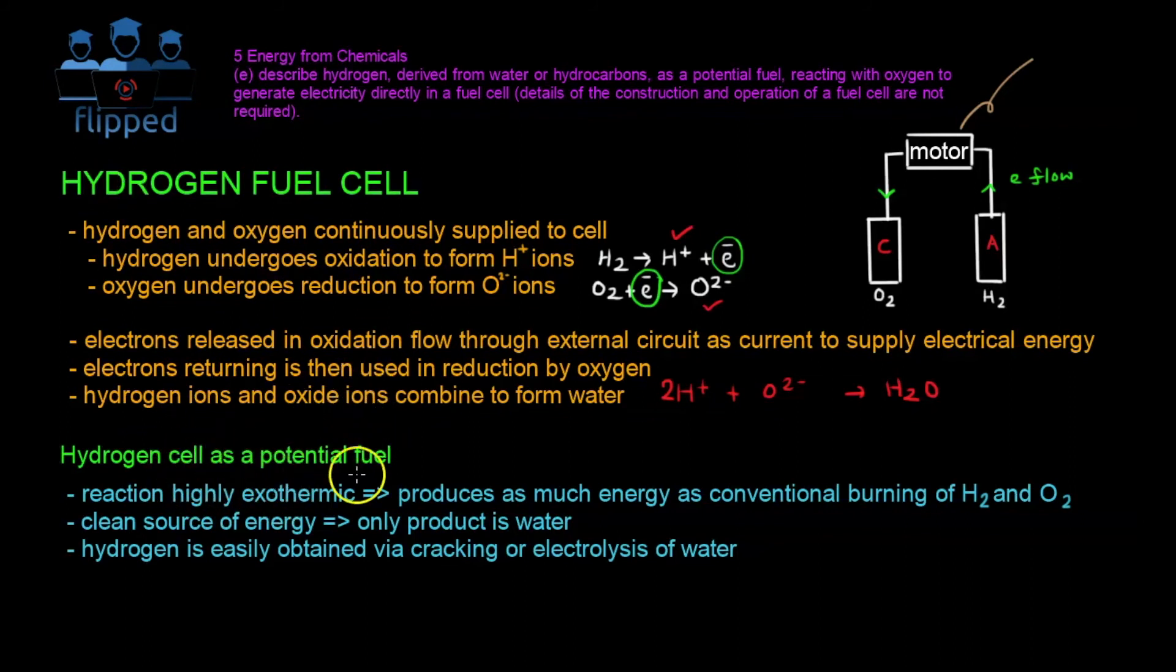Because the reaction is highly exothermic, means it gives us a lot of heat, a lot of energy, and as much energy as conventional burning of H2 and O2, which will actually give us some gases that we don't want, right? Greenhouse gases like carbon dioxide, carbon monoxide, etc. That's not very good for our environment. But if we were to use this method, it will only produce water, which is actually very good. Water is not harmful. It can actually, in fact, it can be useful to supply other operations. And it's a very clean source of energy, because the only product is water, as stated here.